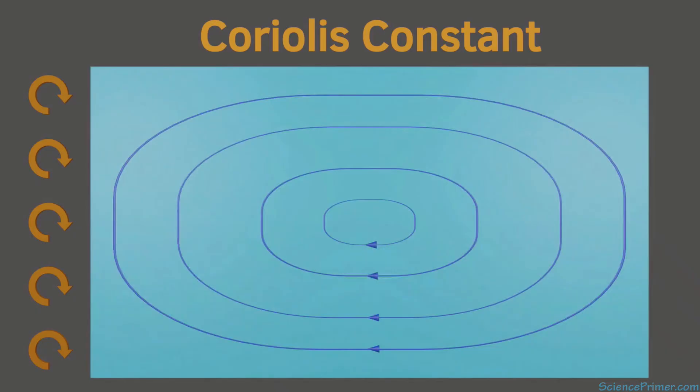The constant Coriolis scenario showed that the currents are caused by geostrophic flow, but it did not explain western boundary intensification. It was also not a good representation of the Earth, because on Earth, the strength of the Coriolis effect is not constant. It varies with latitude.